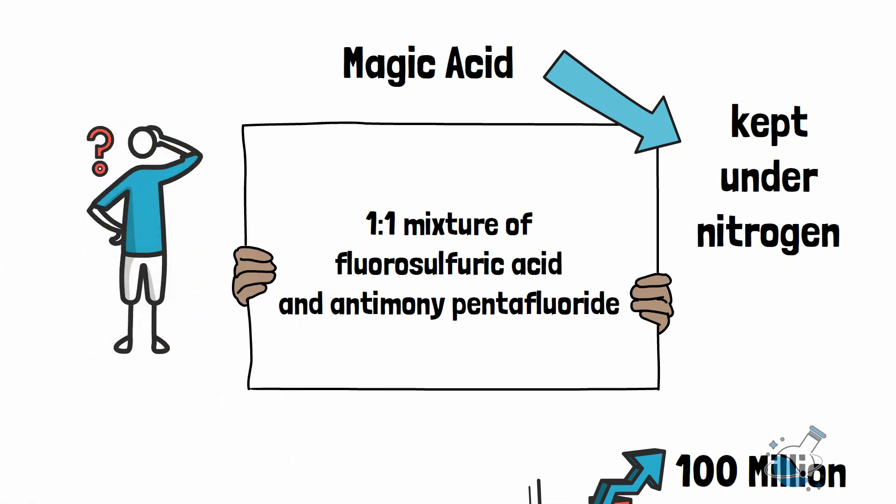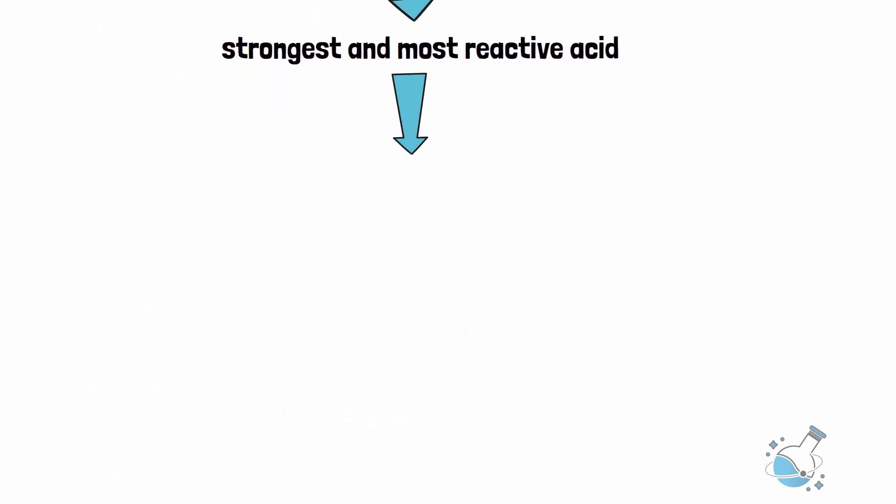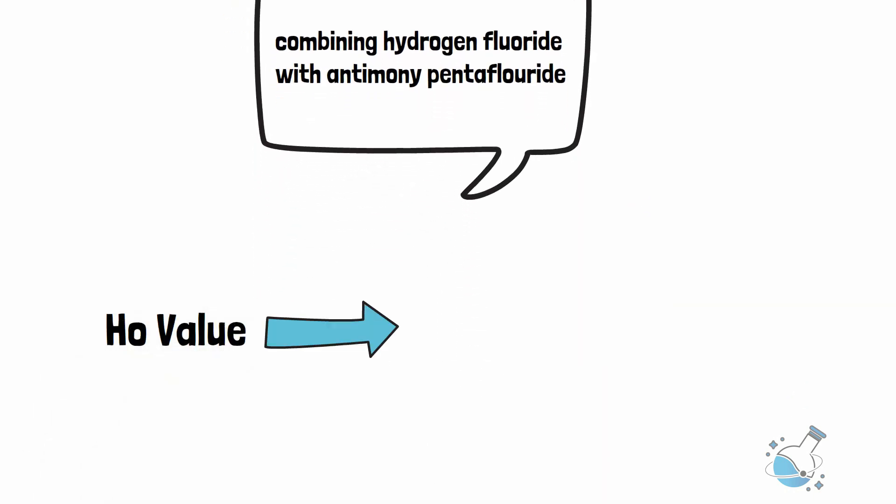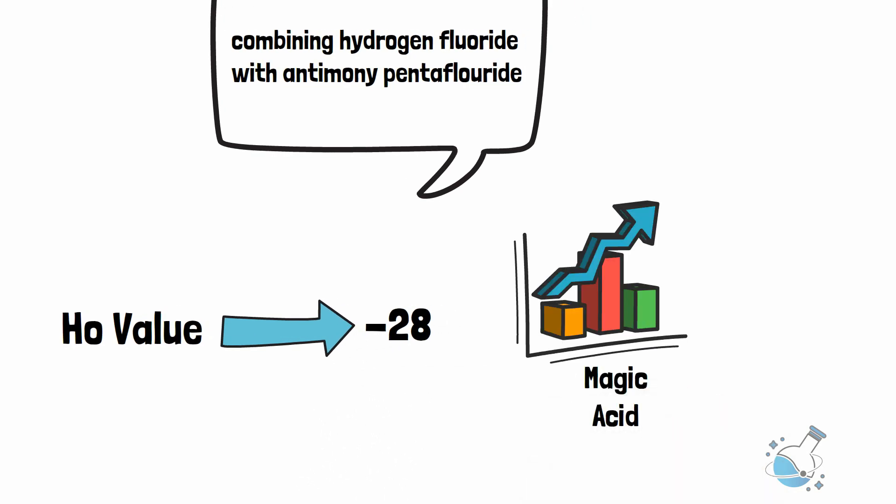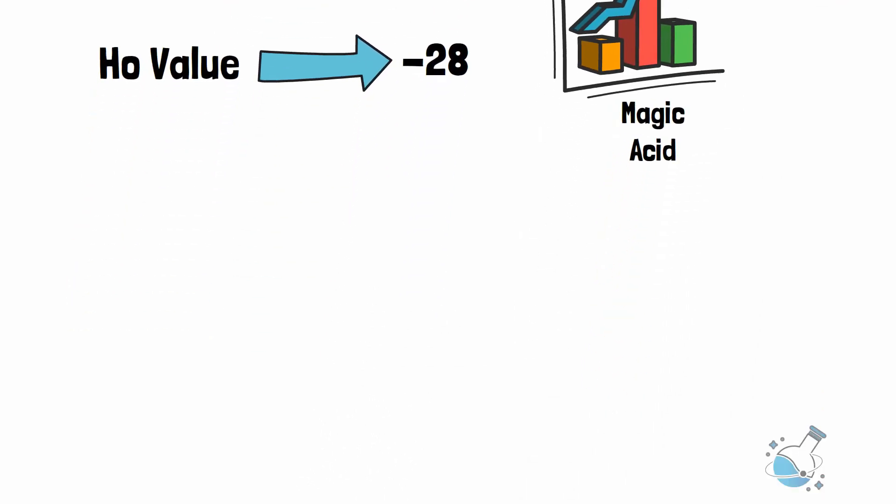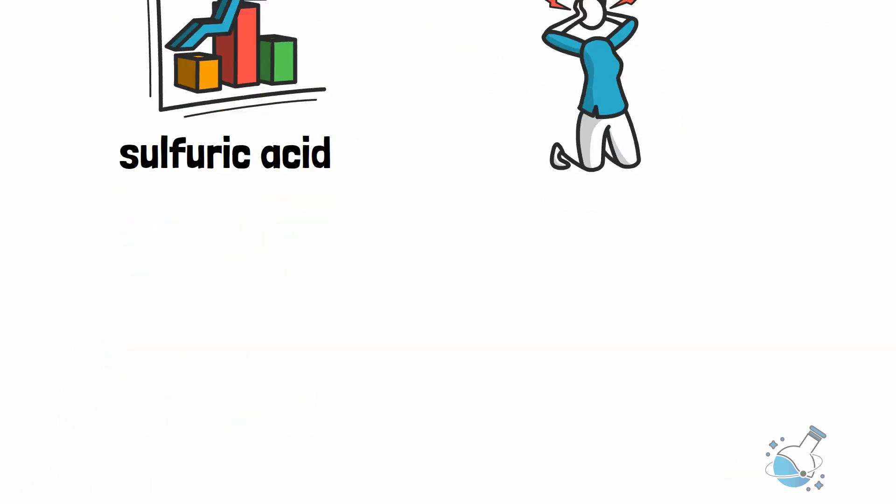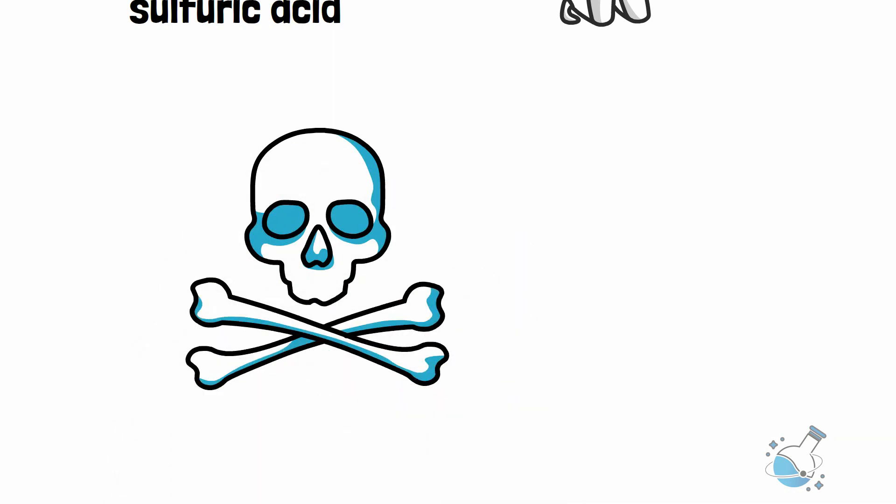That position goes to fluoroantimonic acid. This is the strongest and most reactive acid known to man to this day. It is prepared by combining hydrogen fluoride with antimony pentafluoride. The resulting acid is a monster with an H0 value of minus 28. That's 10,000 times stronger than even the magic acid and 10 million billion times stronger than pure sulfuric acid. It will not just burn you. It will eat through skin, flesh, and bones, everything.